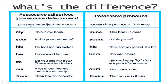Here are examples of possessive adjective plus noun: this is my book; this is your umbrella; he lent me his jacket; I borrowed her car; do you like my doll? No, these are its clothes; a lot of our friends came to our party; their house is lovely. In the case of the possessive pronoun, there is no noun — we don't have a noun modified. You say: mine — this book is mine; yours — is this yours? His — this isn't my jacket, isn't it his?